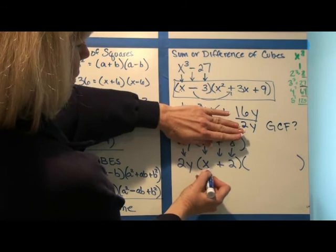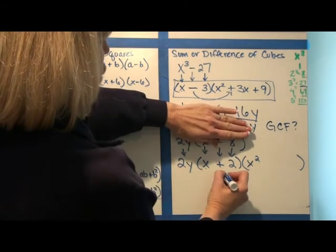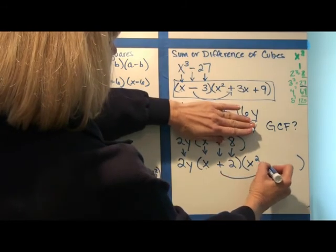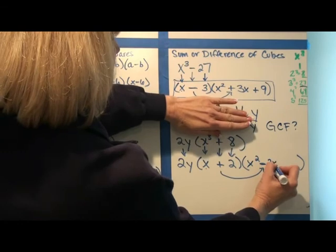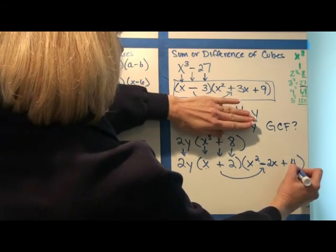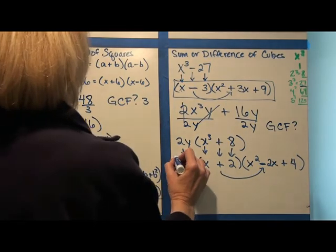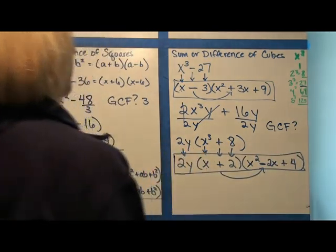And then don't look at that problem anymore. Just look at what you have here. Square the first term. Change that sign to minus. Multiply the two terms together. And then square the last term, which is 4. Once you've done that, you have a completely factored expression.